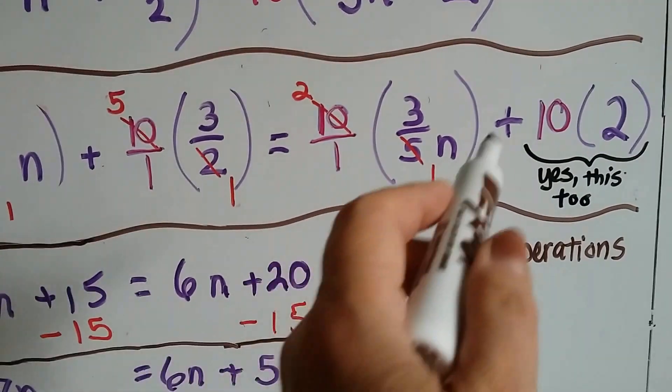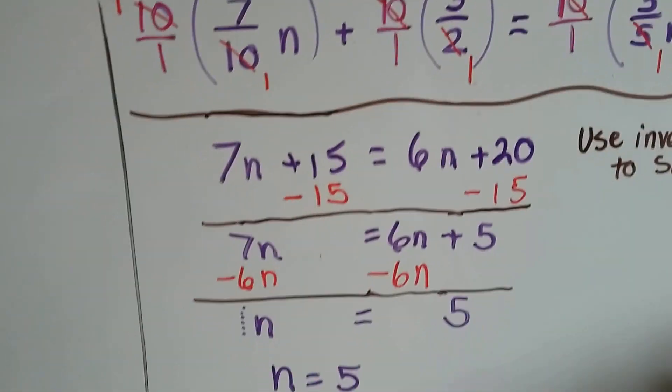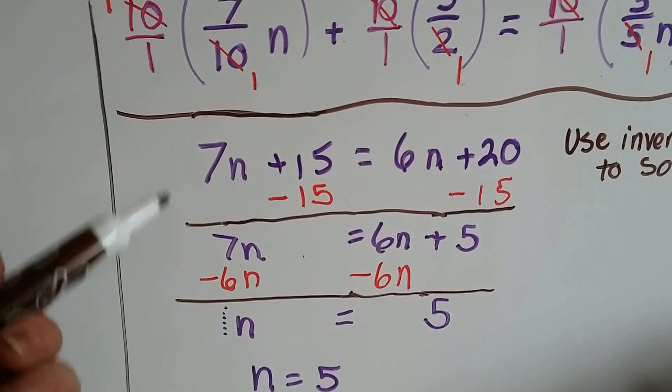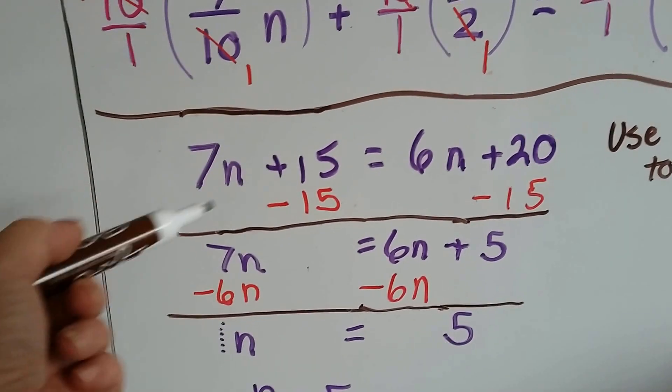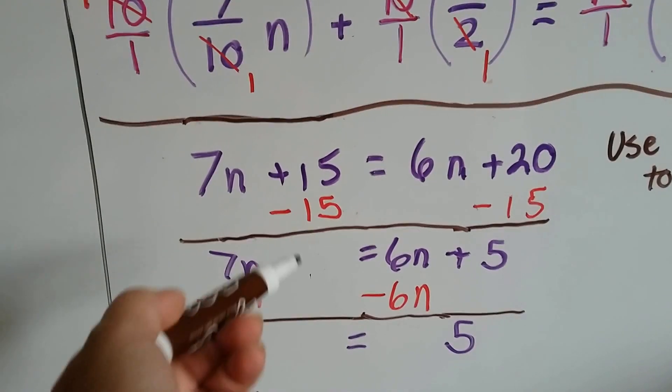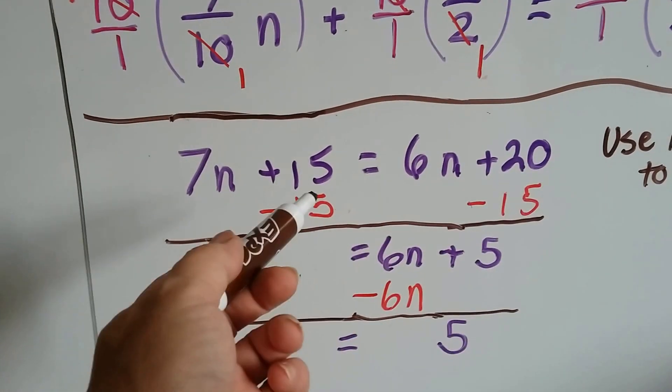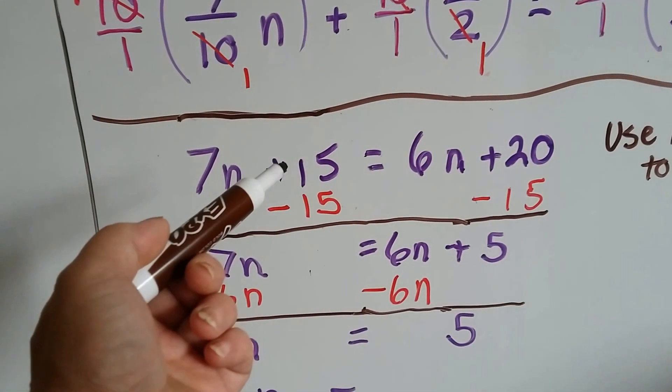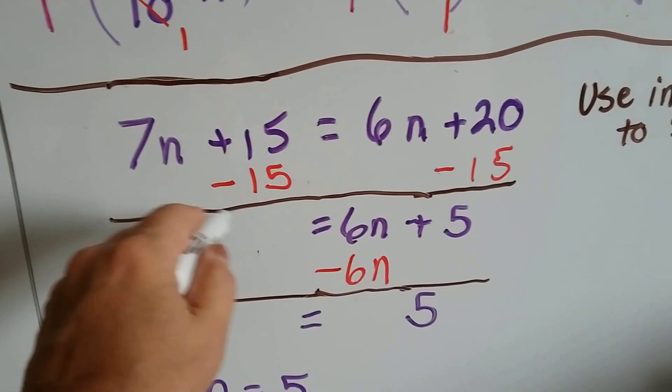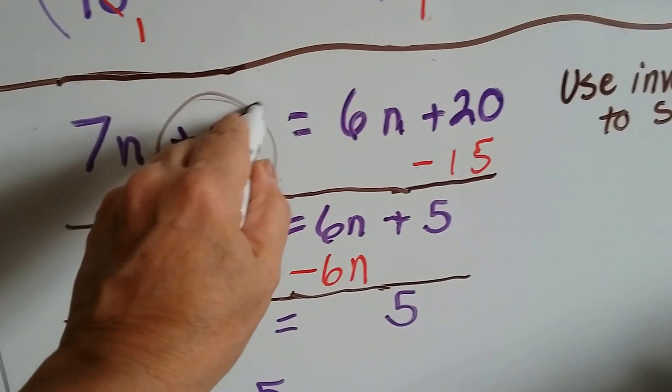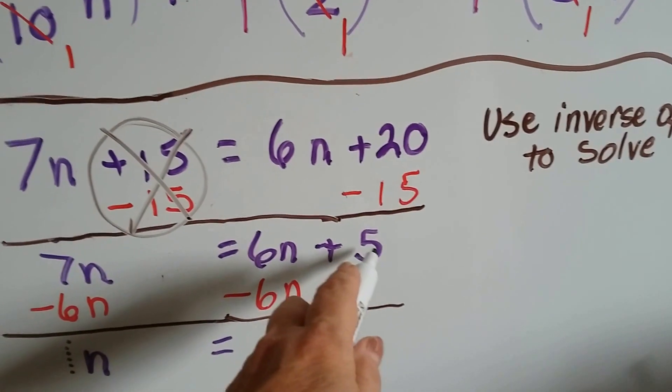Now we can just use inverse operations to solve it. It doesn't matter if we start using inverse operations on the variable term or on the constant term. This time I chose to start with the constant. I saw there's a plus 15, so I'm going to subtract 15 from both sides. Plus 15 minus 15 makes a zero pair and it cancels that out. 20 take away 15 is 5.